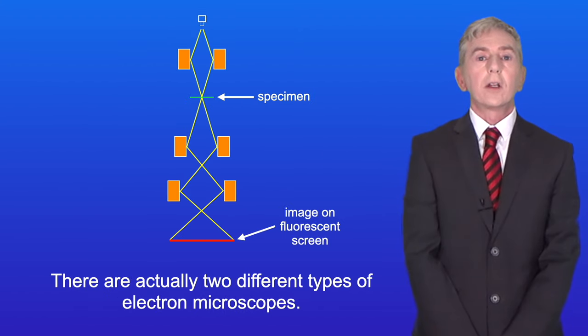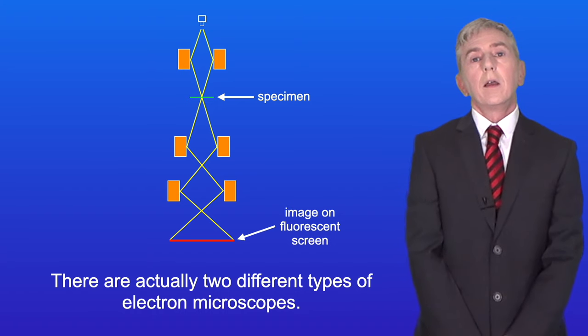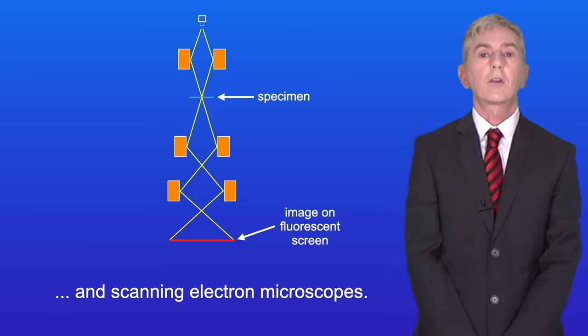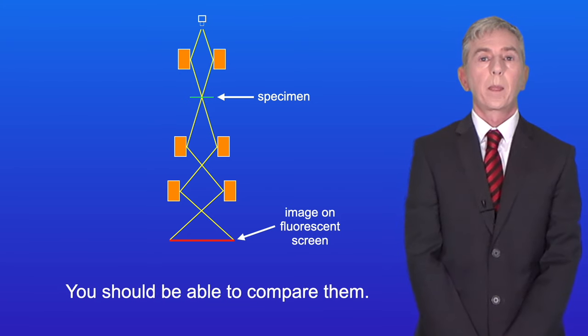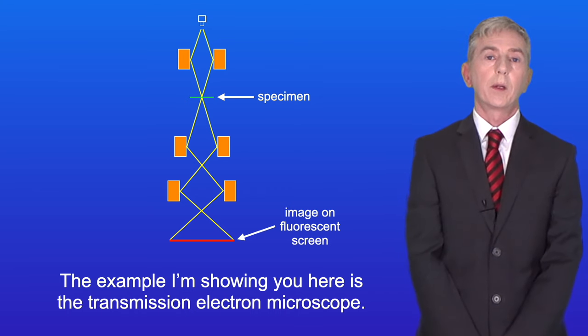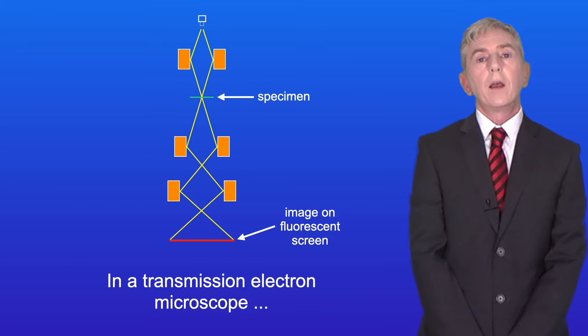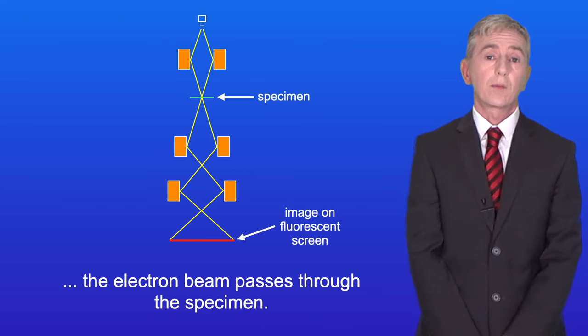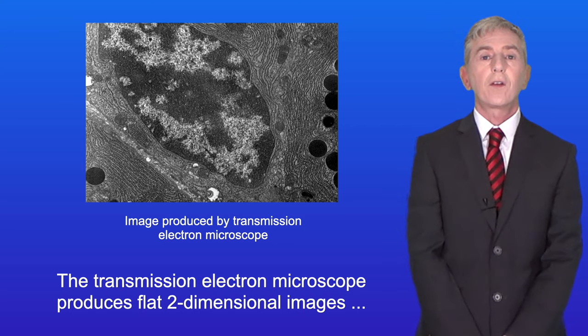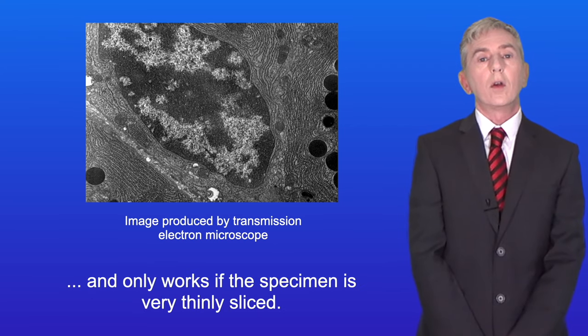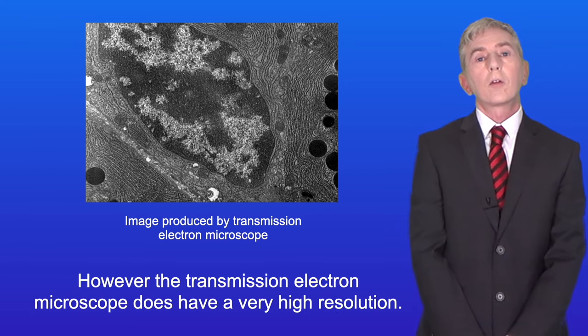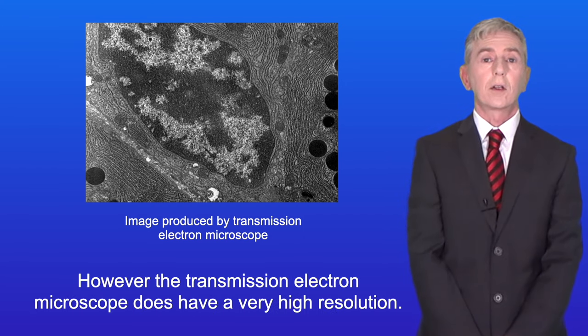There are actually two different types of electron microscopes: transmission electron microscopes and scanning electron microscopes. The example shown here is the transmission electron microscope. In a TEM, the electron beam passes through the specimen. The TEM produces flat two-dimensional images and only works if the specimen is very thinly sliced. However, the TEM does have a very high resolution.